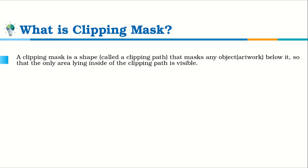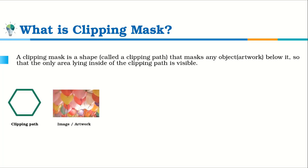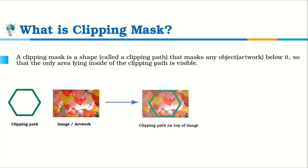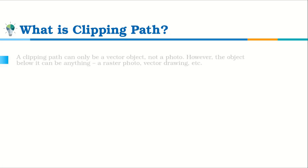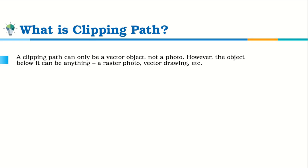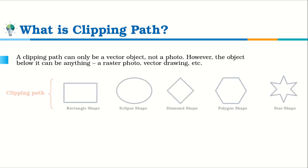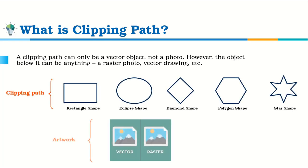A clipping mask in Illustrator is a vector shape known as a clipping path, that masks the object which is below it and just shows the area which lies inside its boundary or path. A clipping path is like an empty frame that hides part of an artwork. It can only be a vector object, not a photo. However, the object or the artwork below it can be anything, like a raster photo, vector drawing, etc.